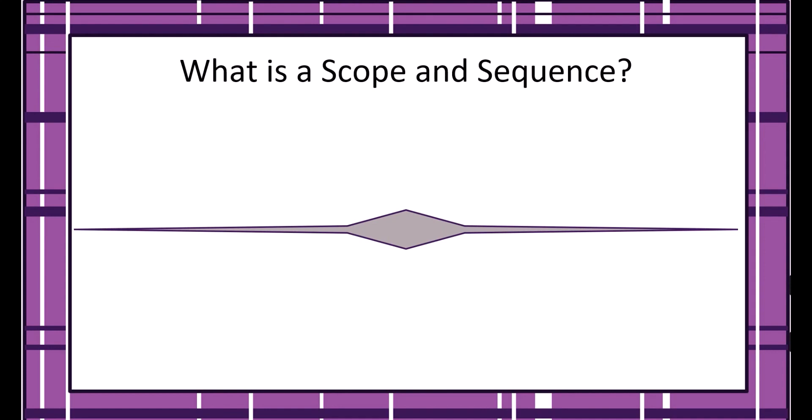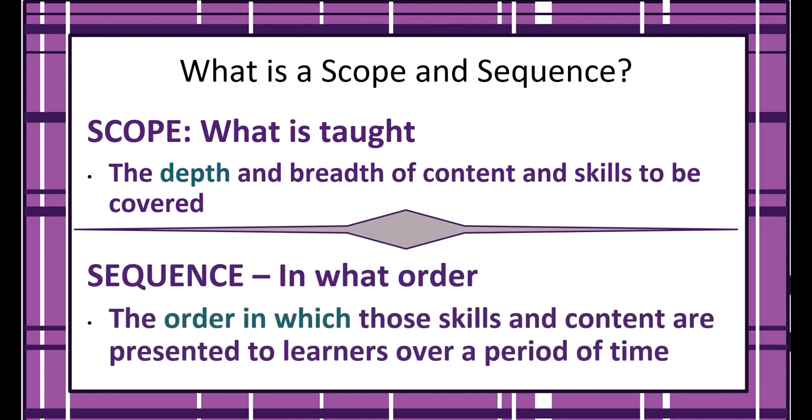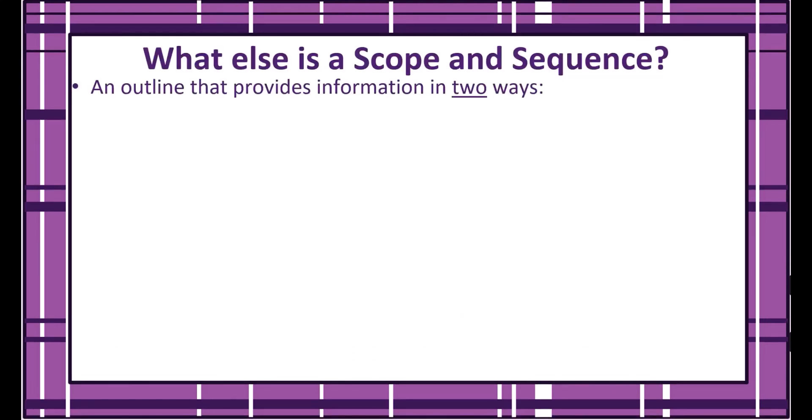What is a scope and sequence? The scope and sequence spells out in broad strokes what is covered and in what order at each class level. The scope lays out the depth and breadth of content and skills to be covered. The sequence provides the order in which those skills and content will be taught over time.